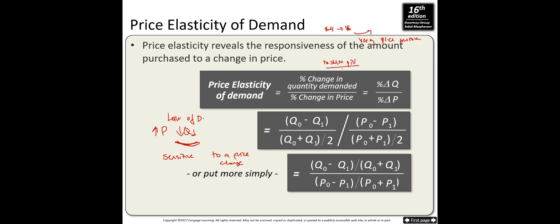Now think about insulin pills. You need them for survival, so if the price increases from $100 to $150, you're not going to give up using insulin — you are not price sensitive. If you are not price sensitive, you continue to consume with maybe a small reduction, but you won't change your consumption decision too much. Very price sensitive is called elastic; not price sensitive is called inelastic.